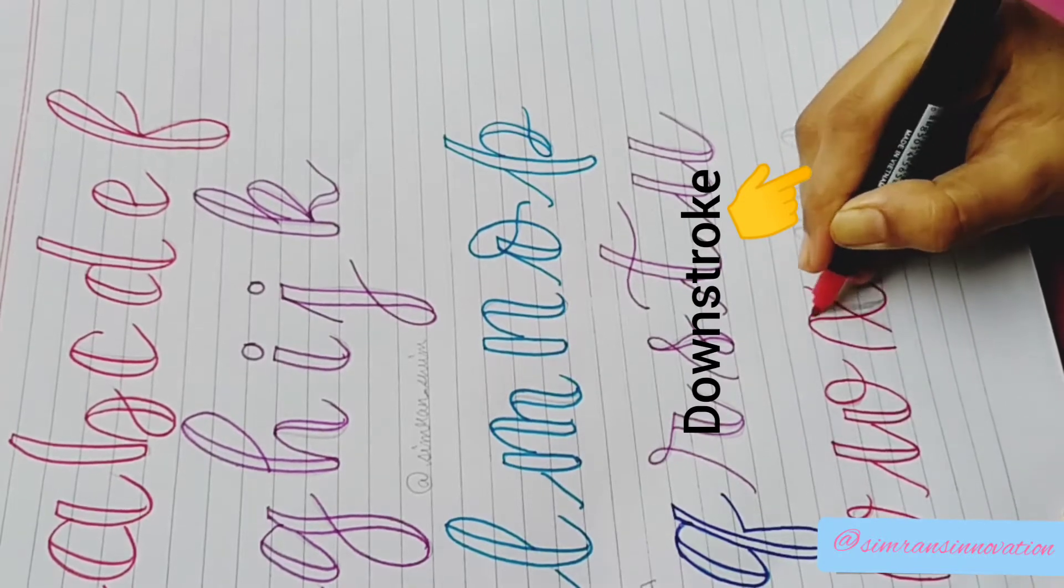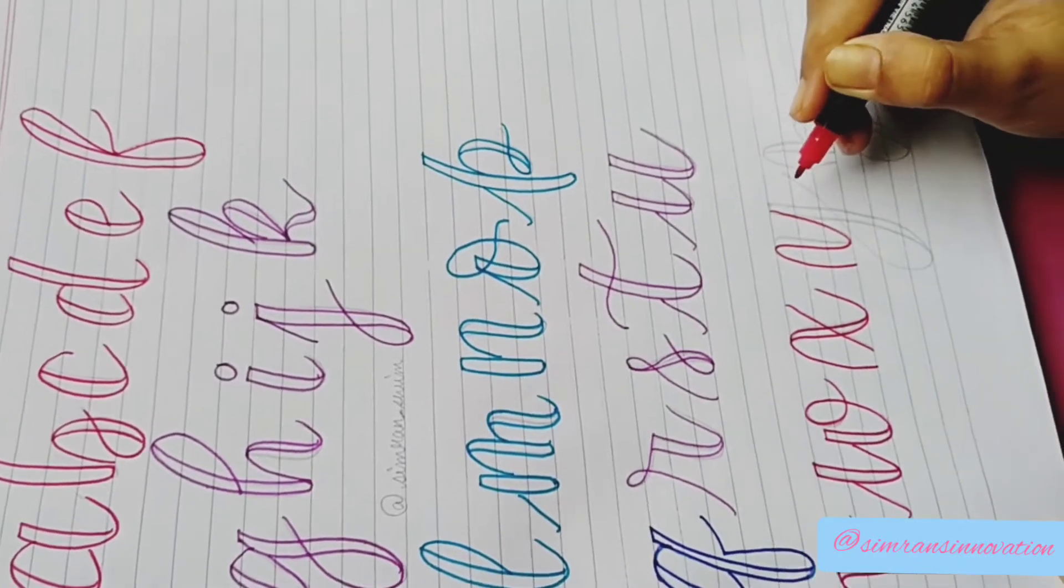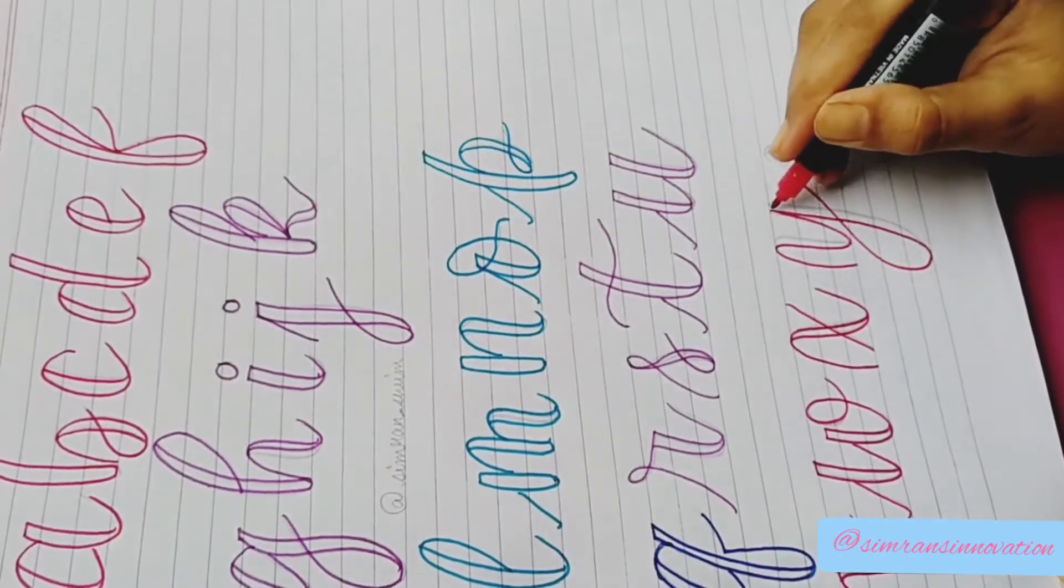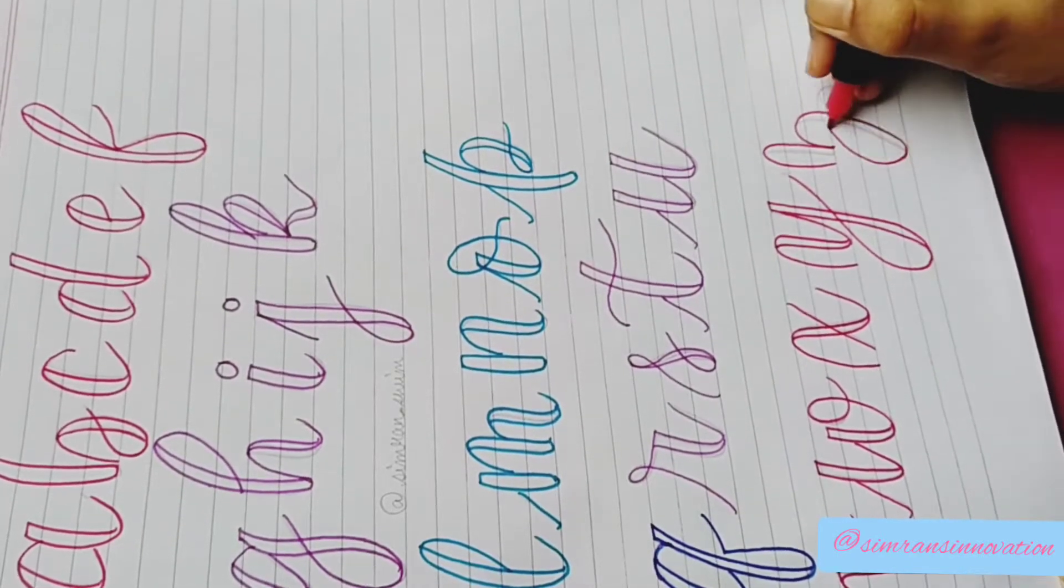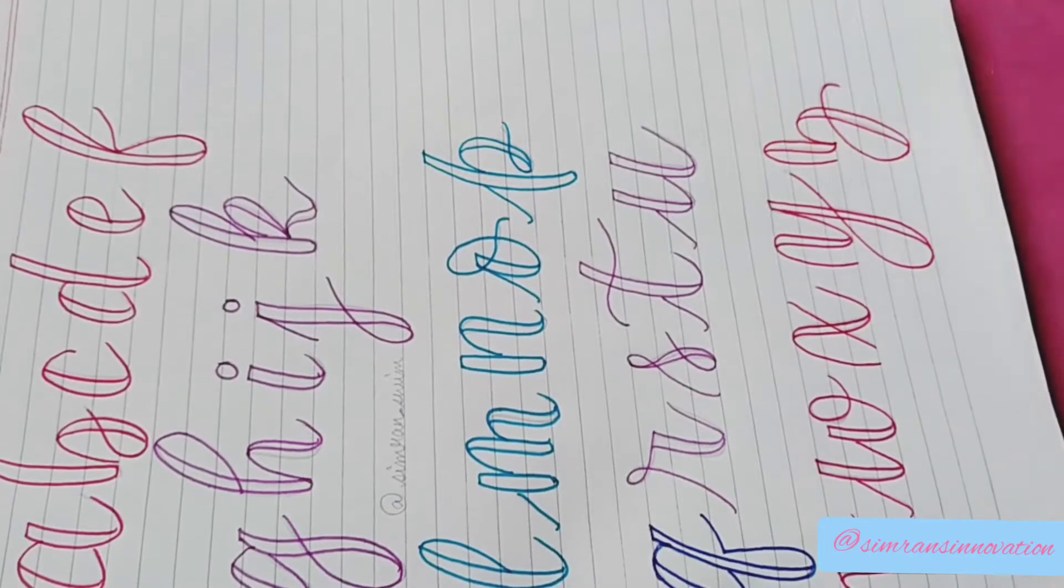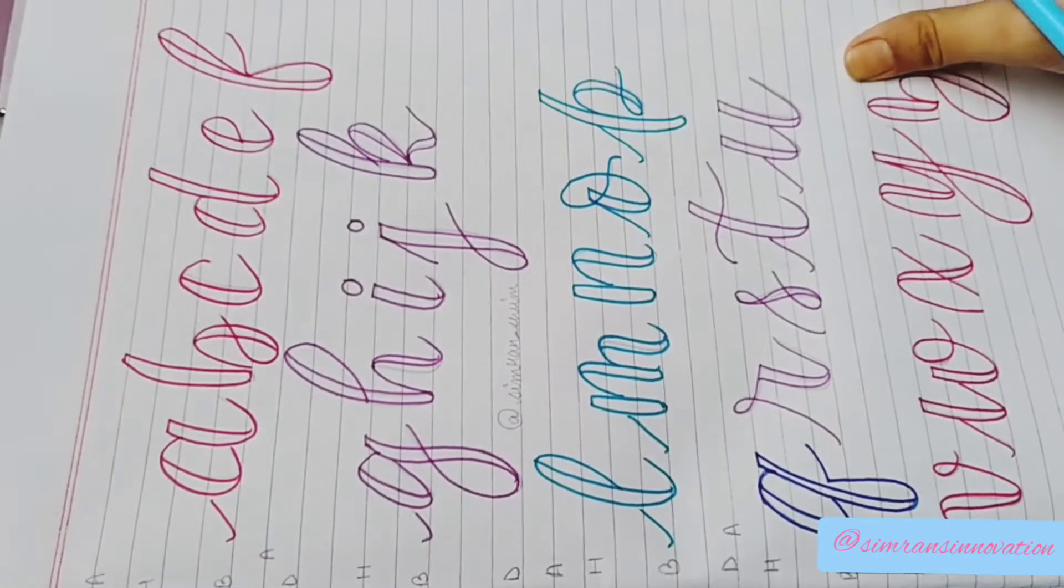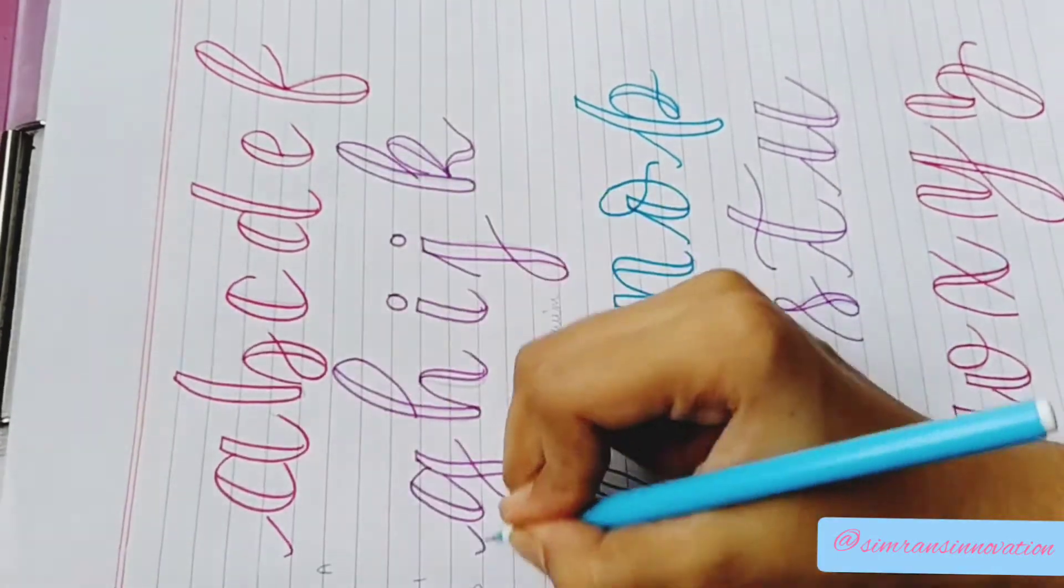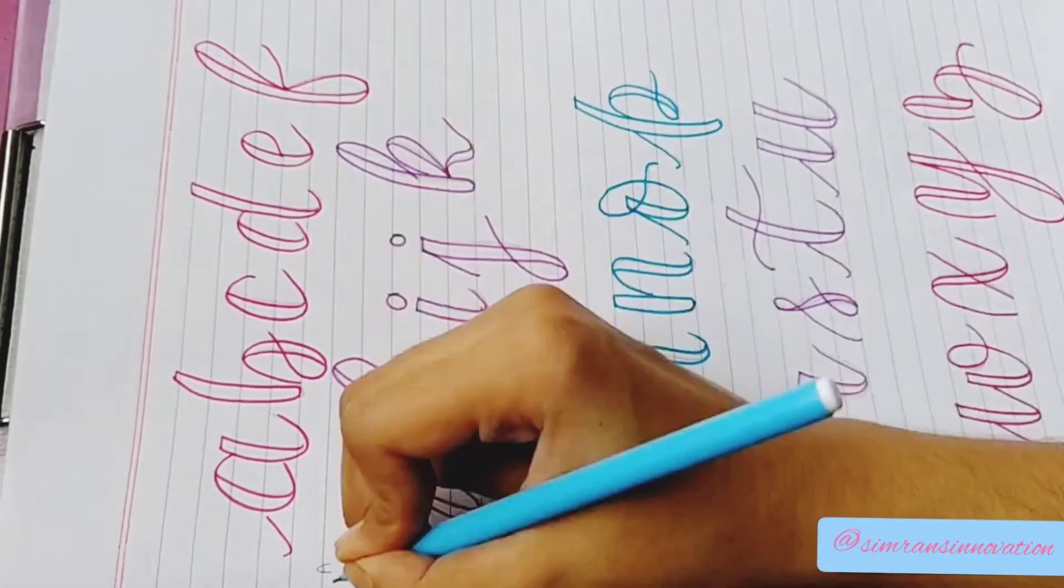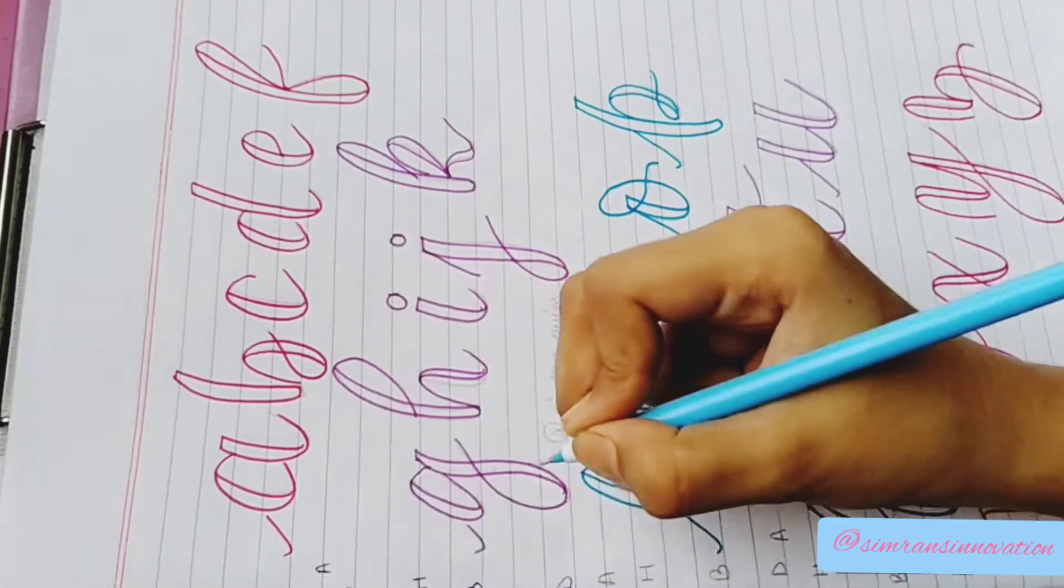So basically, downstrokes are created when your pen falls down or when your pen moves towards the bottom of the page. Whenever your hand is moving in a downward direction, your strokes will be thickened. And when your pen moves towards the top of the page, that is known as upstrokes. Upstrokes are always thin, whereas downstrokes are always thick.